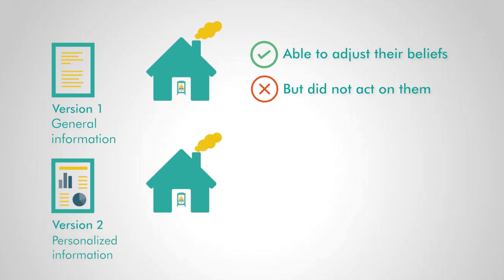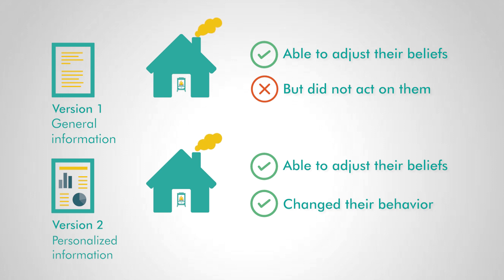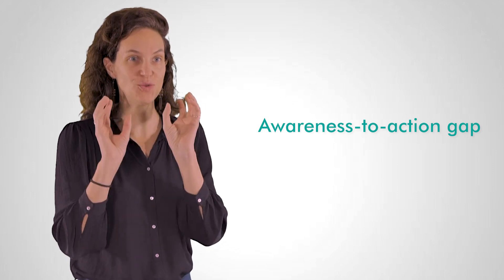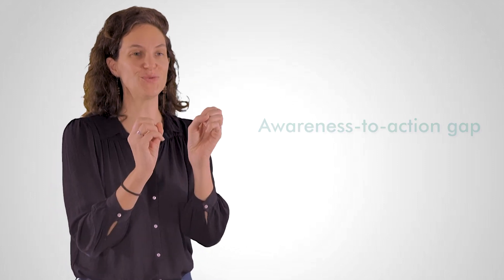Whereas with the personalized information, they also changed their behavior. So that's much more efficient to reduce what we call the awareness-to-action gap - the fact that you know that it's bad to do that, but you don't decide to really stop doing it. The personalized information was really efficient to act on this gap.